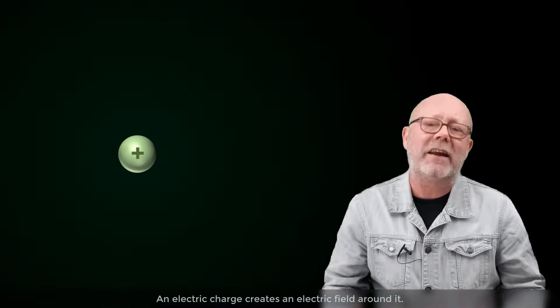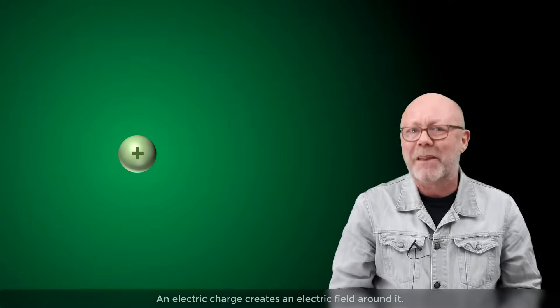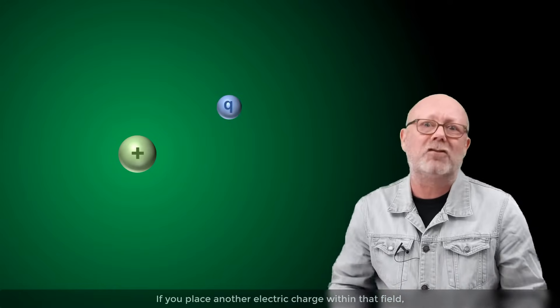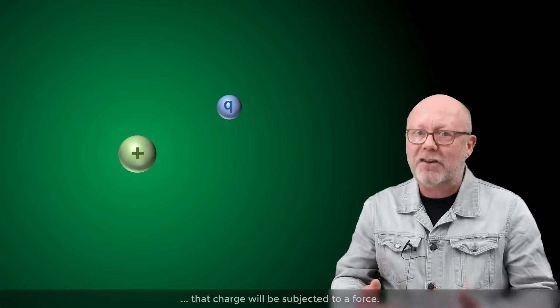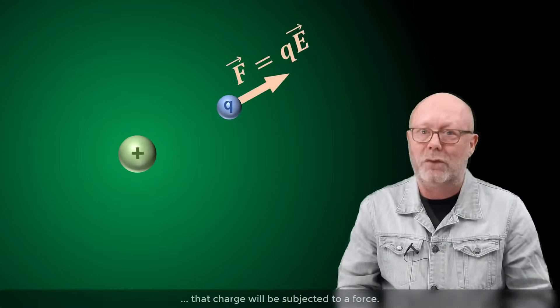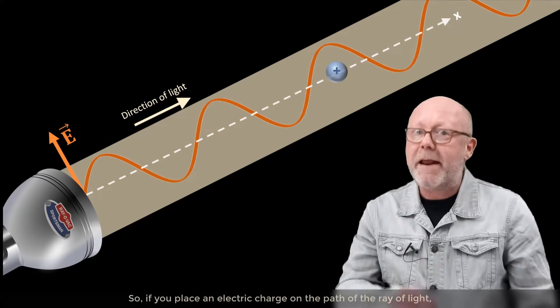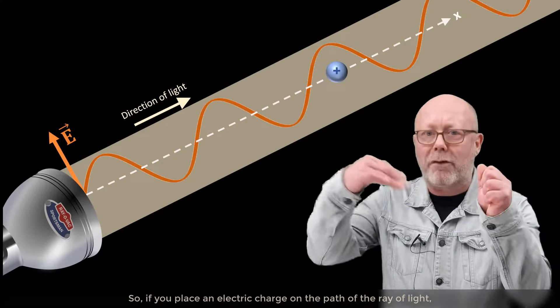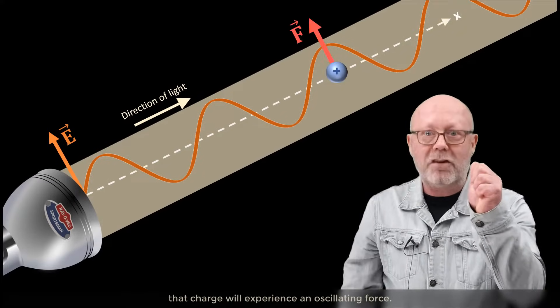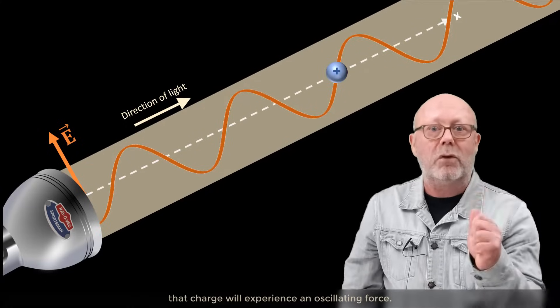An electric charge creates an electric field around it. If you place another electric charge within that field, that charge will be subjected to a force. Light is an oscillating electric field. So if you place an electric charge on the path of the ray of light, that charge will experience an oscillating force.